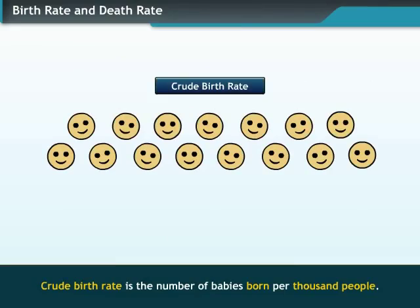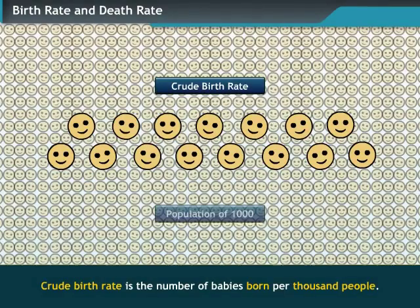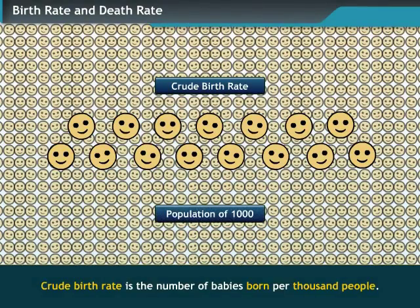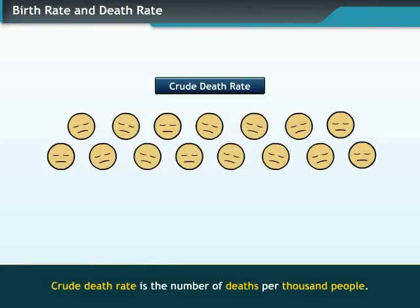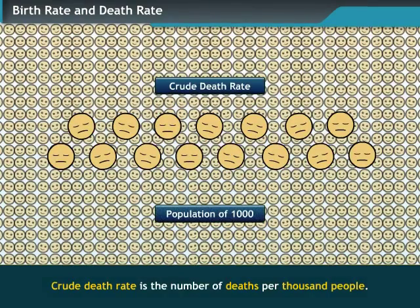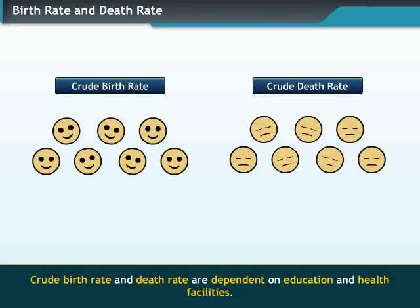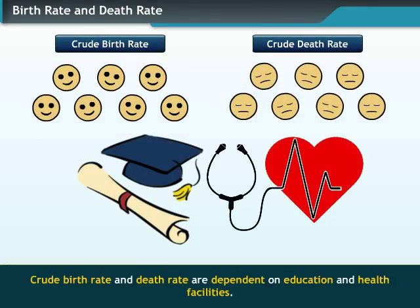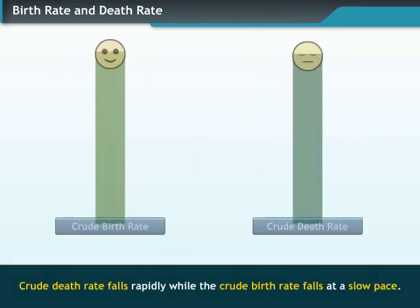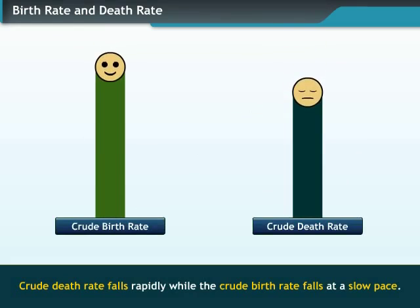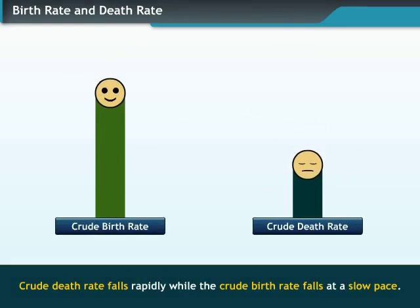The crude birth rate is the number of babies born per 1,000 people. Similarly, the number of deaths per 1,000 people is the crude death rate of a nation. Crude birth rate and death rate are dependent on education and available health facilities. Crude death rate falls rapidly, while the crude birth rate falls at a slow pace.